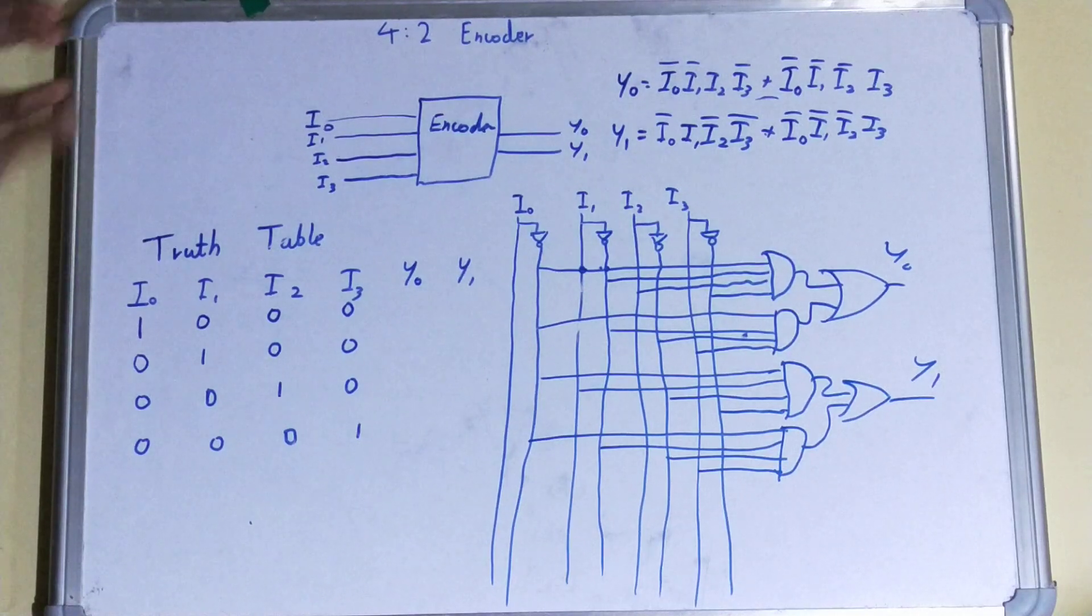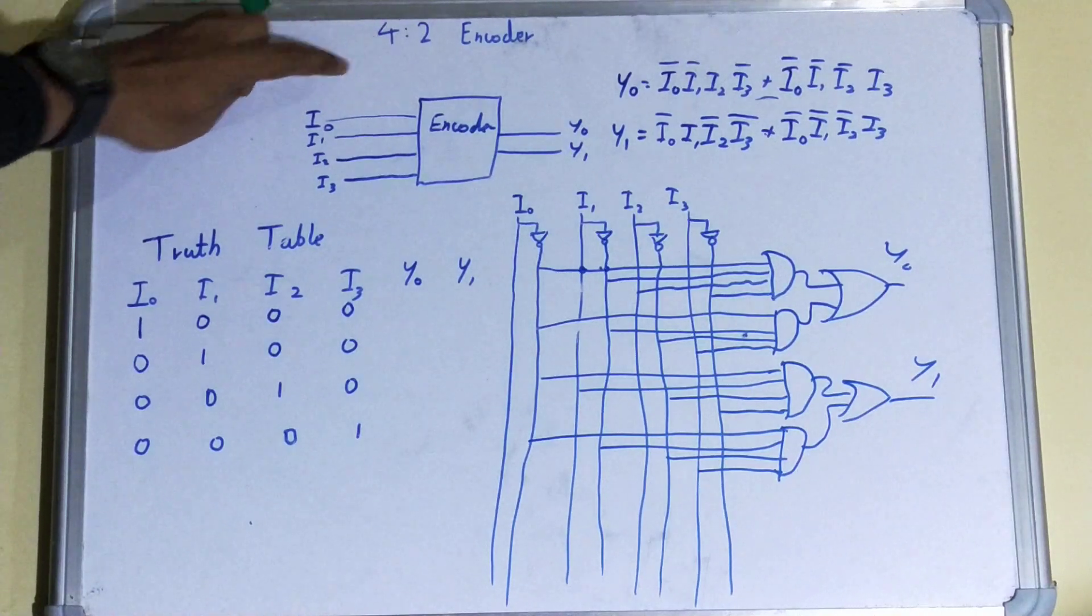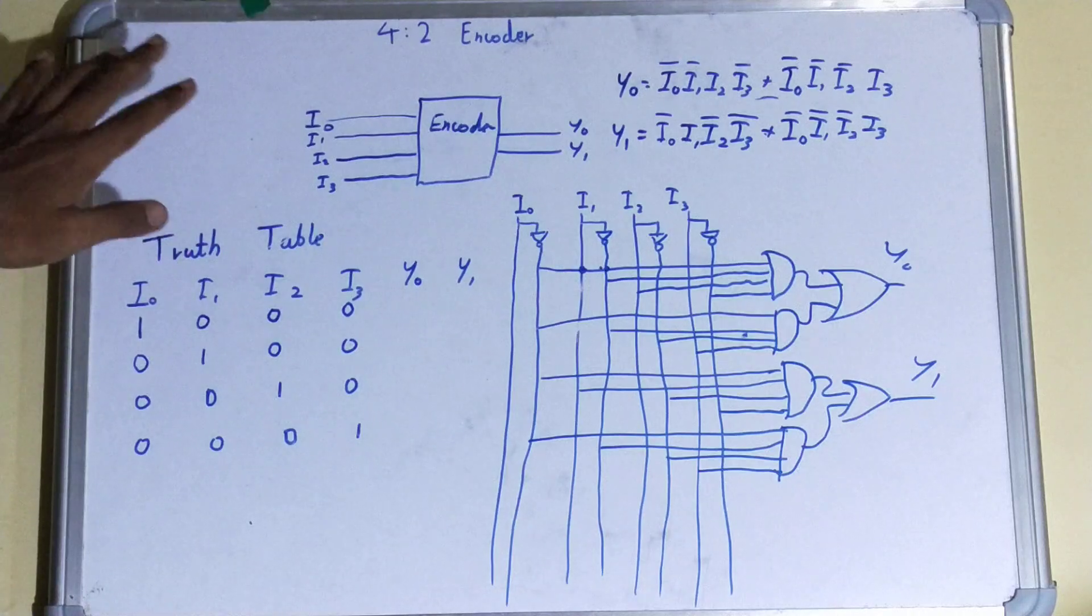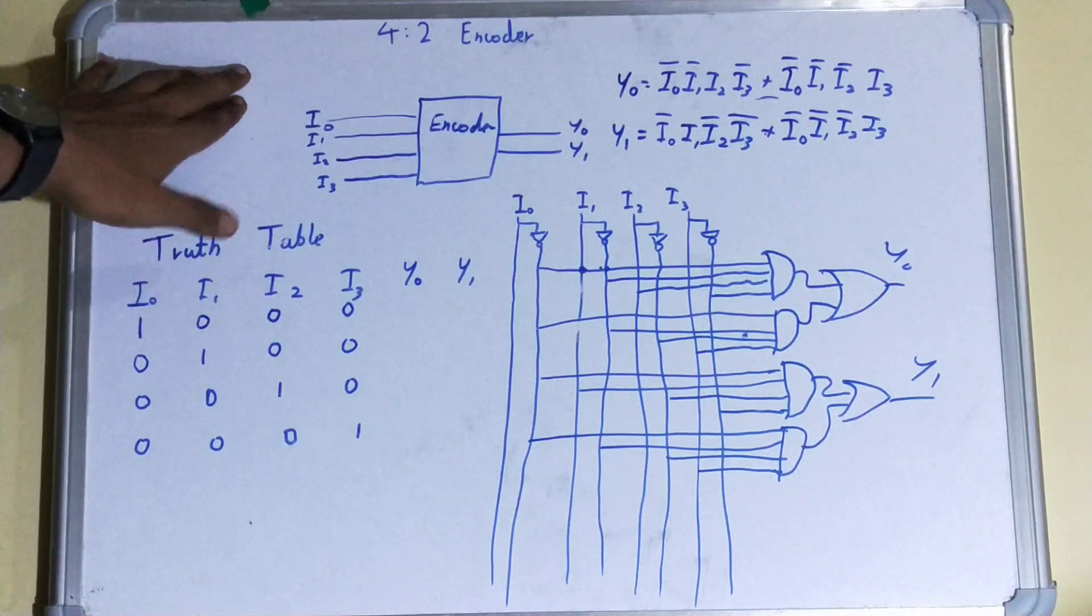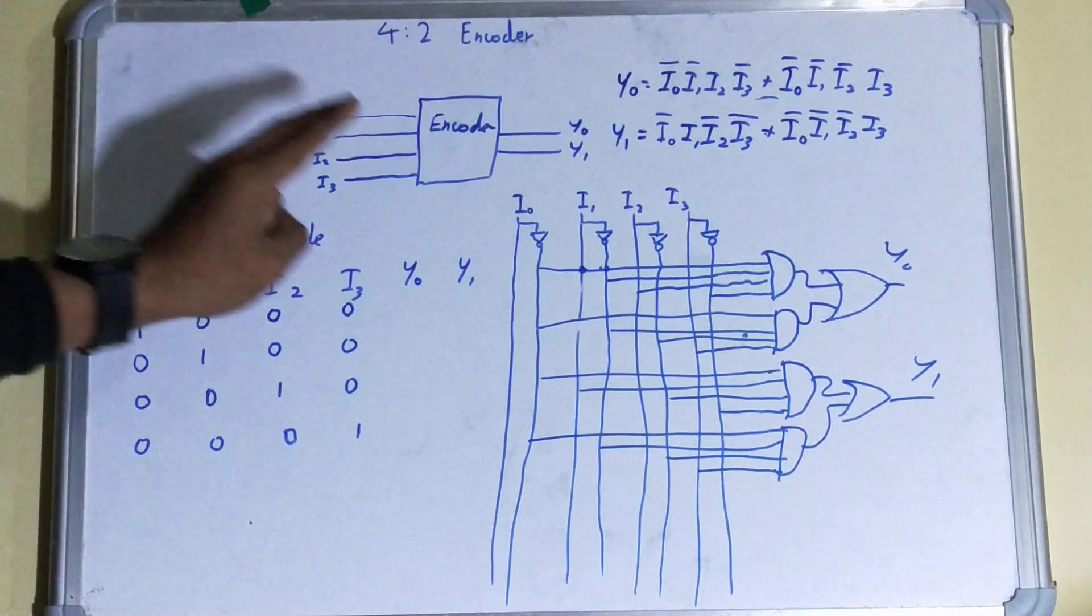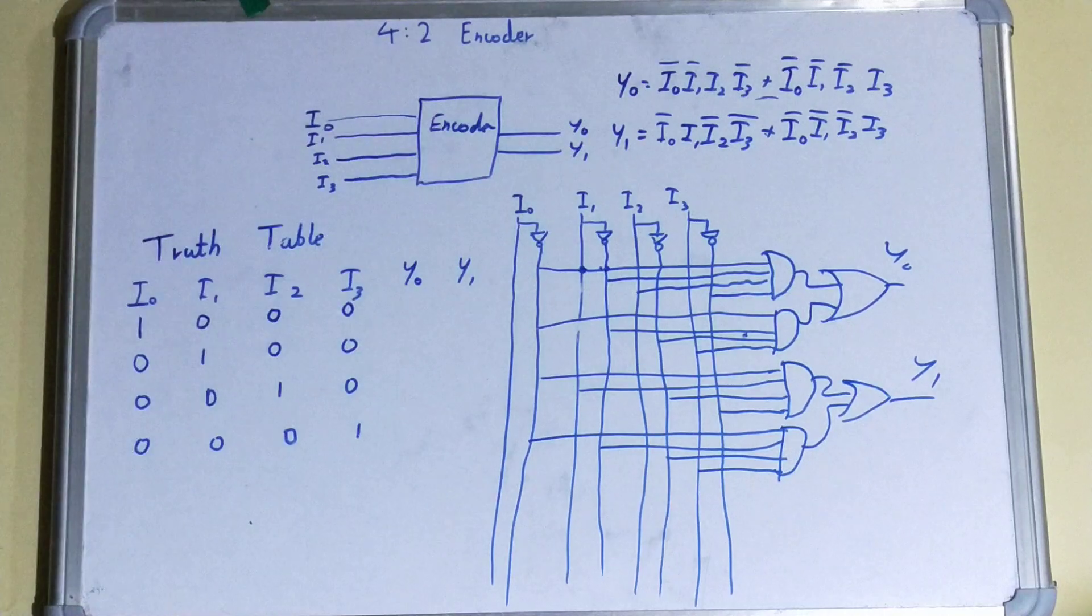Talking about the 4-to-2 encoder, you can make out from the name itself that there are four input lines: I0, I1, I2, I3. You can name them anything - they may be renamed as D0, D1, D2. And the output lines are two: Y0 and Y1. So the block diagram should be clear to you now.